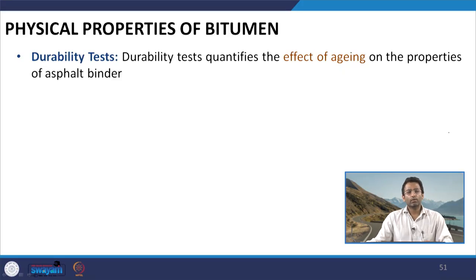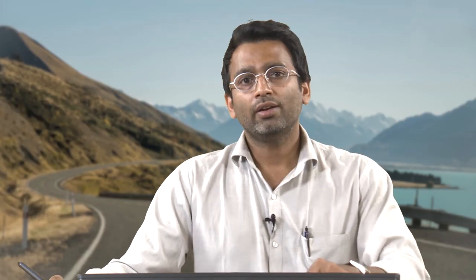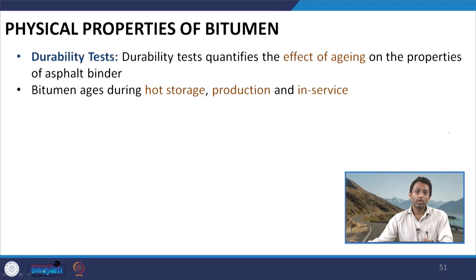Today we will start by discussing about the durability aspects of bitumen. When we talk about the durability test, what does durability signify? Durability indicates the ability of any material to retain its desirable properties over its lifetime. When it comes to bitumen, we are more interested to see how aging affects the properties of bitumen over a period of time. Bitumen ages during different stages of its use.